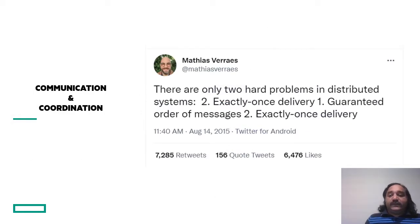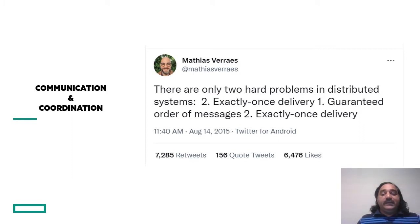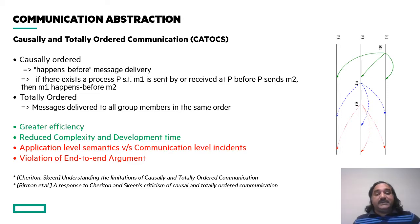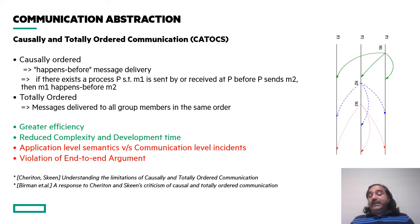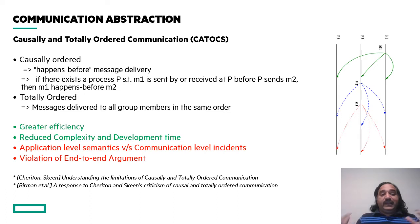In terms of the hard problems that sessions on distributed systems address, Matthew has put it well in his tweet about the two problems of exactly-once delivery and guaranteed order of messages. Jokes aside, these are actually communication abstractions about totally ordering and causally ordering messages between different components. Causally ordered delivery gives the primitive for happens-before message delivery: if message M1 is received at process P before P sends M2, that implies M1 happens before M2.